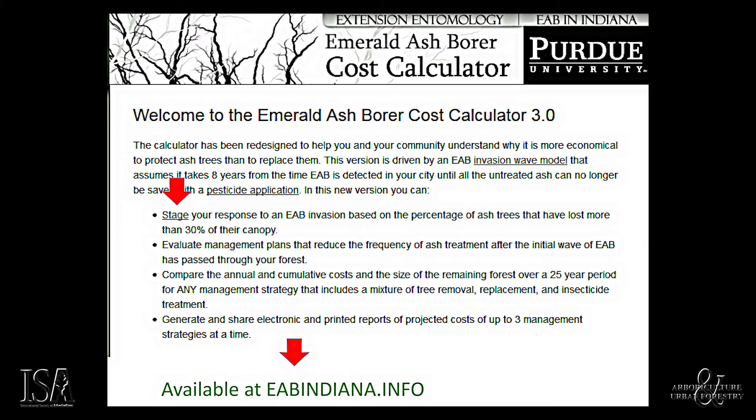By staging the decline of their local ash communities and with local estimates of the cost of tree removal, replacement, and treatment, cities can determine the most appropriate plan of action. Our economic analysis provides hope for cities already affected by EAB. Substantial economic benefits can still be obtained when control programs are initiated in year five of the cycle, when about 16% of the trees are damaged beyond the point of saving them.